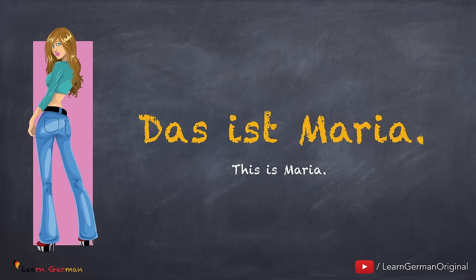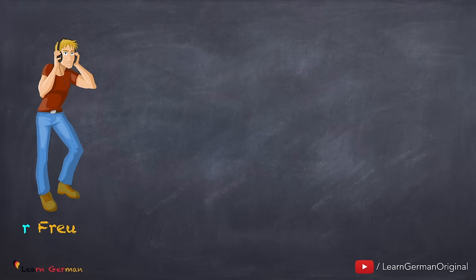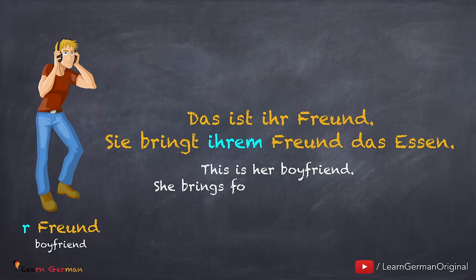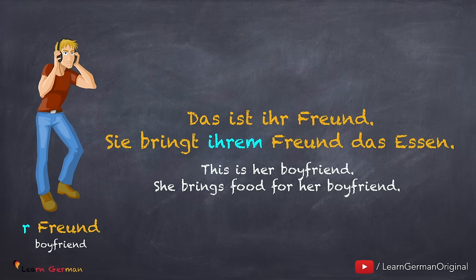Das ist Maria. Das ist ihr Freund. Sie bringt ihrem Freund das Essen. Since Maria is feminine, you would use the possessive pronoun 'ihr'. It changes to 'ihrem' in dative because the article for 'Freund' is 'der'.